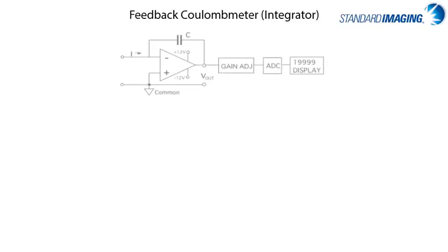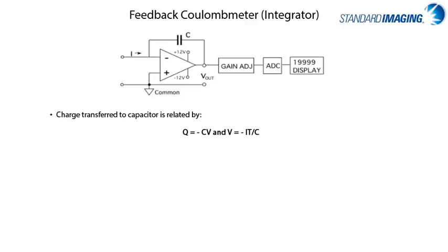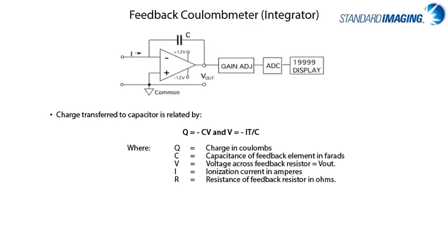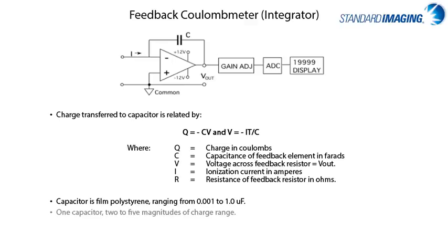The other preamplifier circuit used in electrometers is the picocoulometer, where the ionization current is passed through a capacitor, related by q = -CV and V = -it/C. Most capacitors use film polystyrene and range from 0.001 to 1 microfarads for medical physics applications. One capacitor provides two to five orders of magnitude of charge range for most standard electrometers.